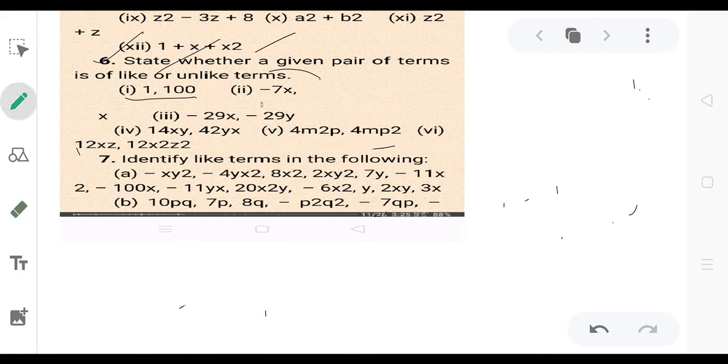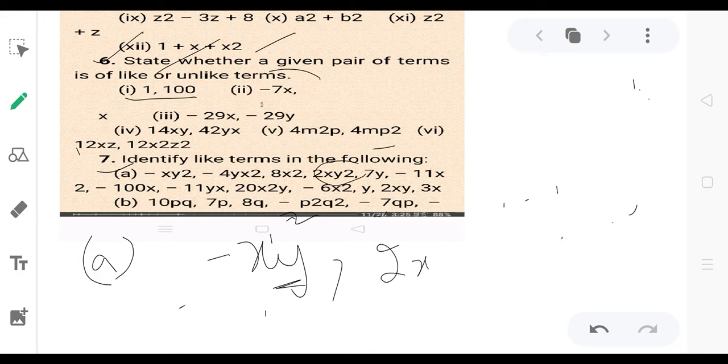Question number 7: identify like terms in the following. We have -xy². Looking at xy², the x is power 1 and y is power 2. We also have 2xy², so these are like terms.